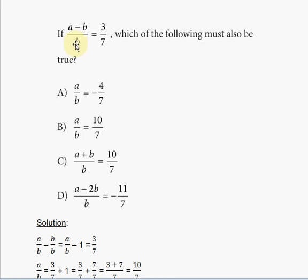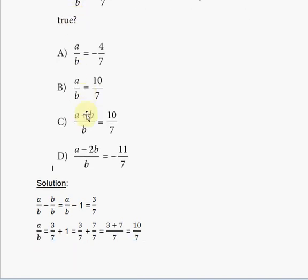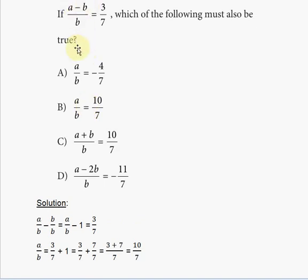So a minus b divided by b is the same thing as a over b minus b over b, because both a and b share the same denominator. You can split this fraction into two fractions: a over b minus b over b.